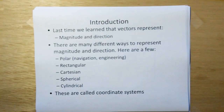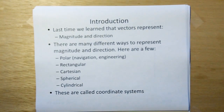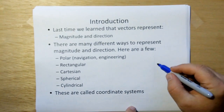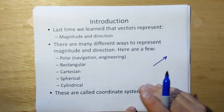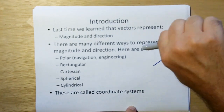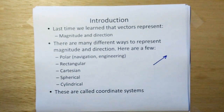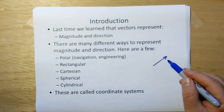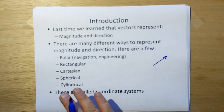Last time we learned that vectors represent a magnitude and direction. We represent that magnitude and direction with an arrow, where the length of the arrow is the magnitude and the direction that the arrow points is the direction. There are many different ways to represent a magnitude and direction — we can parametrize the way that arrow points in many different ways.